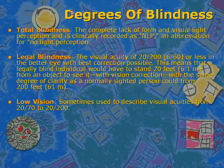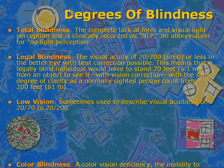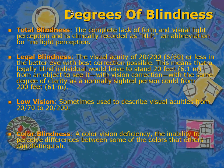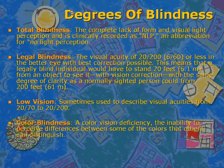A third degree of blindness is low vision, sometimes used to describe visual acuity from 20/70 to 20/200. Colorblindness is also a degree of blindness, which is a color vision deficiency — the reduced ability to perceive differences between some of the colors that others can distinguish.